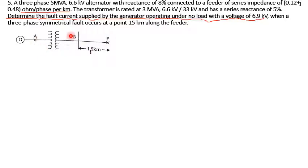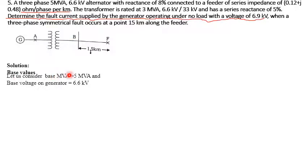This is a single-line diagram we have. First and foremost, we have to calculate the base values. In this chapter, we have to consider the highest MVA rating. The MVA base of the generator is 5 MVA and the transformer is 3 MVA, so we go with the generator. The voltage on the generator side is 6.6 kV.